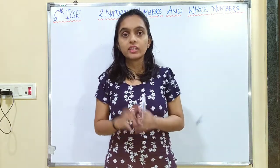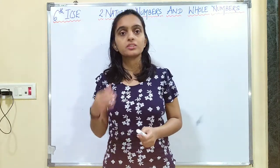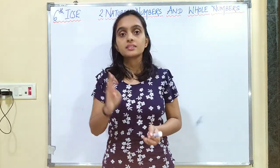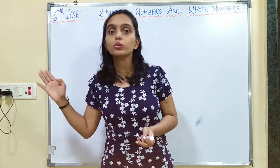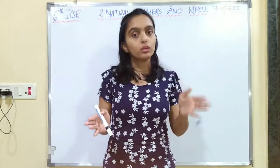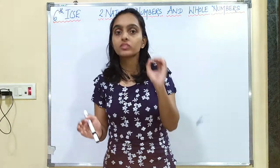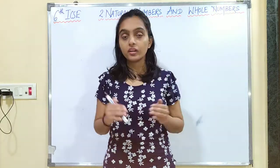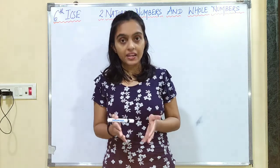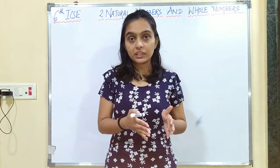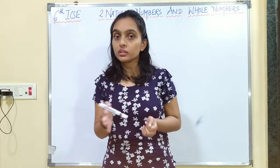In that, we had studied what are natural numbers and what are whole numbers. Natural numbers are all the counting numbers starting with 1, 2, 3 and then going up to infinity. And whole numbers were all the natural numbers along with the number 0. We had also represented the addition, subtraction, and multiplication of natural numbers on a number line.